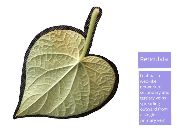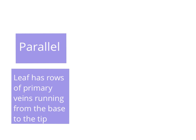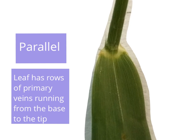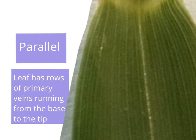Now let's take a look at parallel. Parallel leaves have rows of primary veins running from the base to the tip. We can see very nicely here the rows of primary veins, all starting right at the petiole and running all the way down the leaf right to the tip. The center one is a little bit more dominant than the others, and if you zoom in a little bit closer, you can see there is some variation in the thickness, but they are never touching each other.